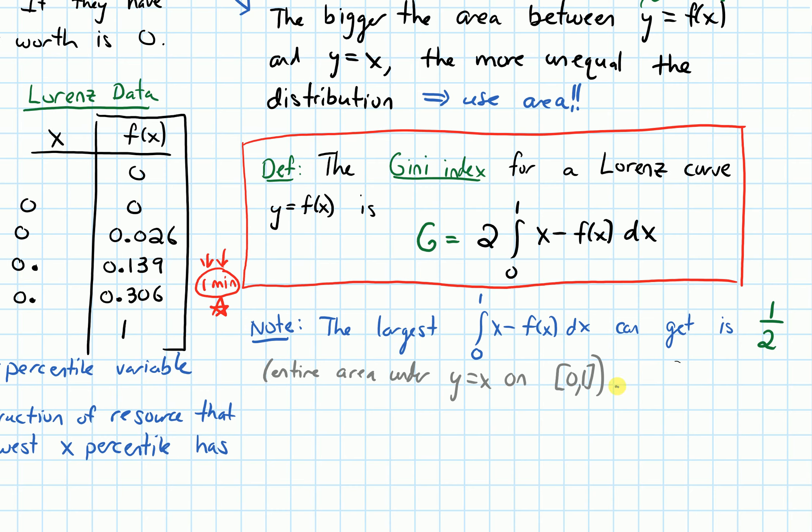So we are going to multiply this integral by two so that G, our Gini index, will be between zero and one.